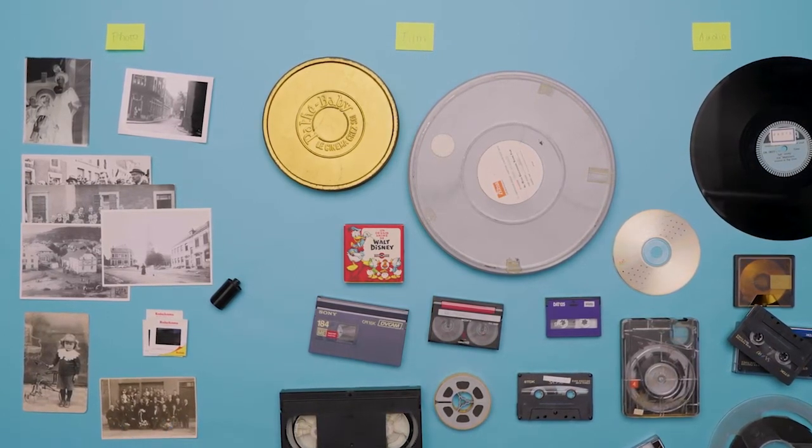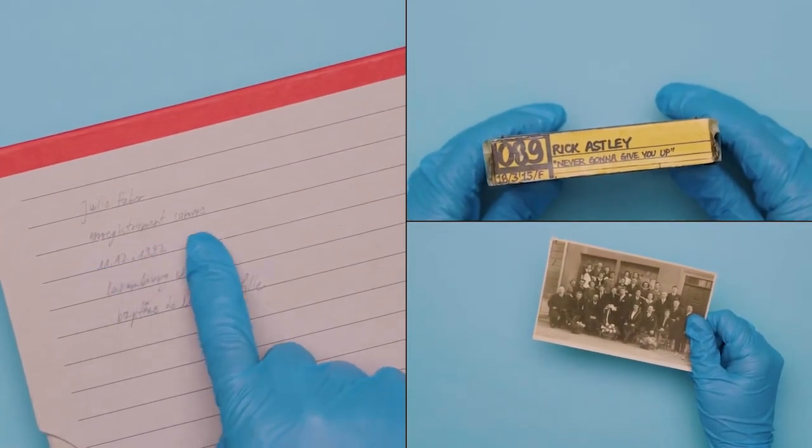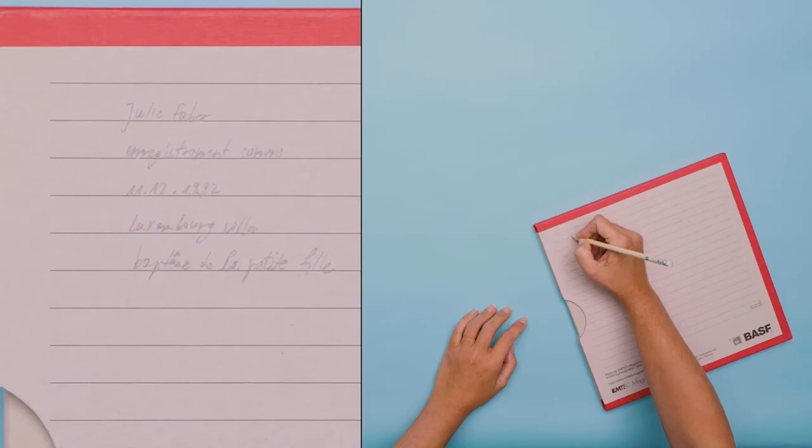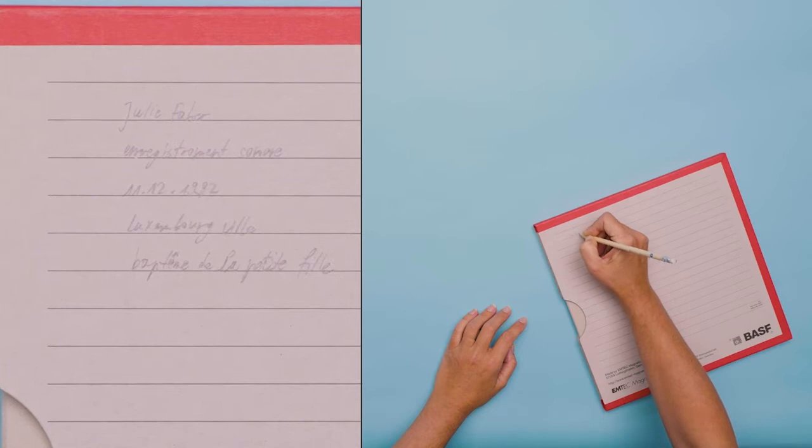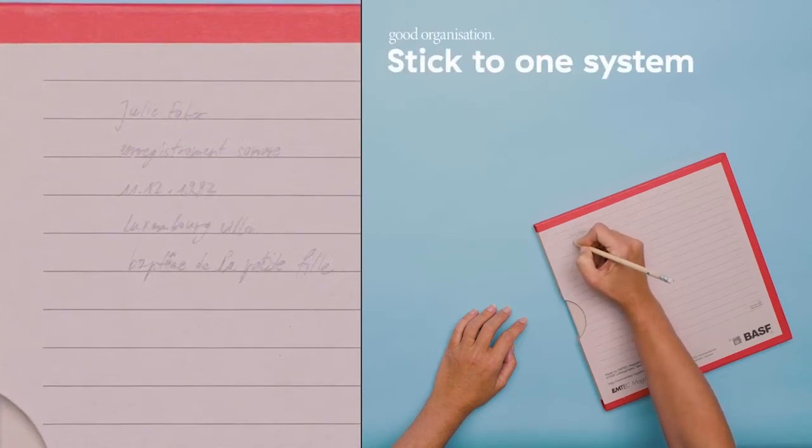We recommend you sort your documents according to media type. Then you can come up with further divisions. For example, you can sort them according to dates, themes or even titles if they exist. It is up to you. Just make sure to stick to one system. That way, you will always be able to find what you are looking for.